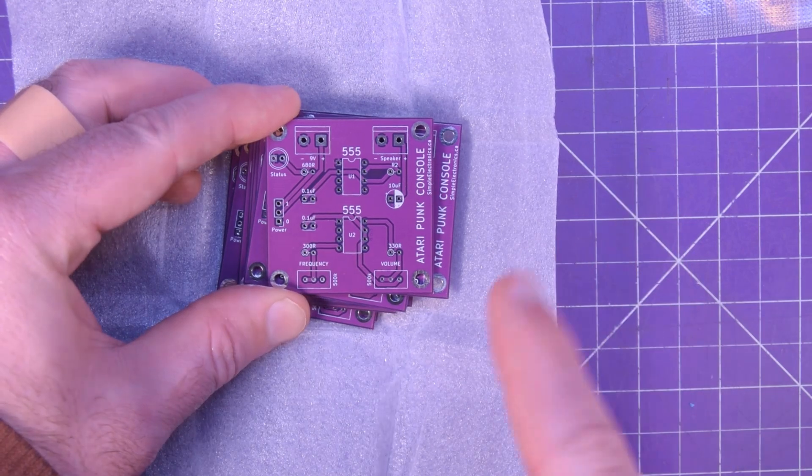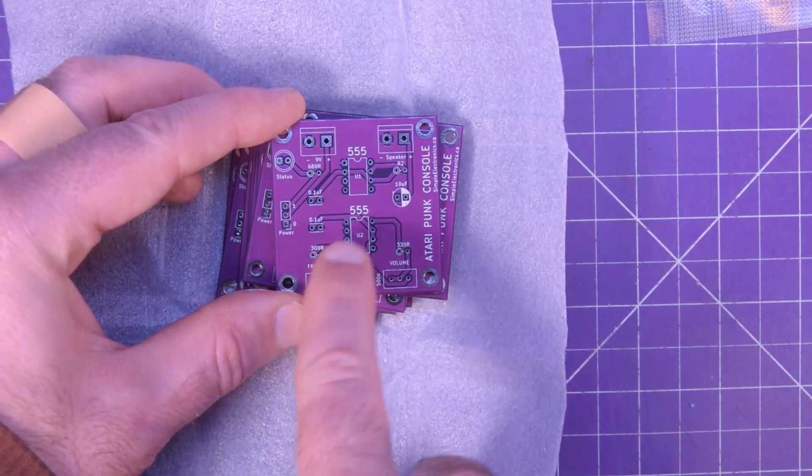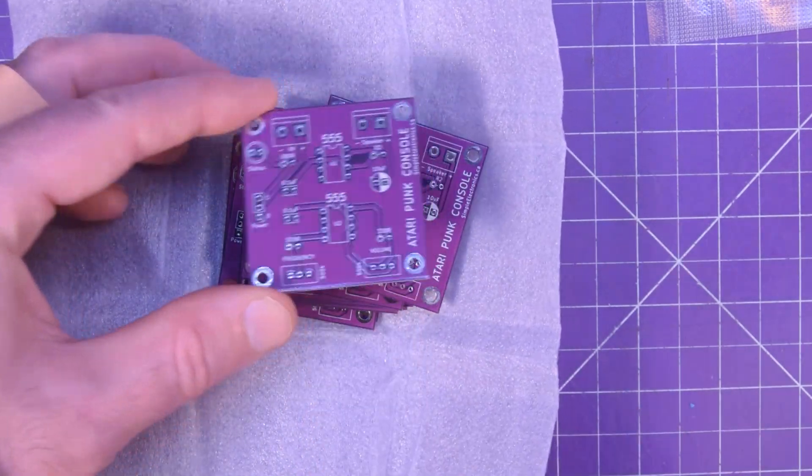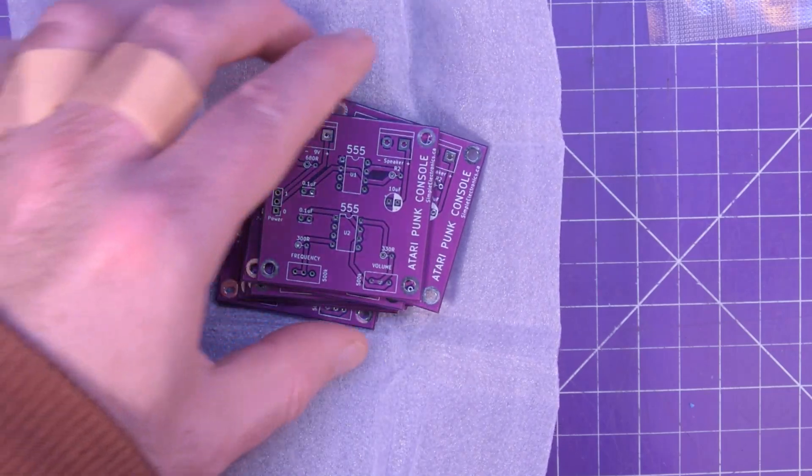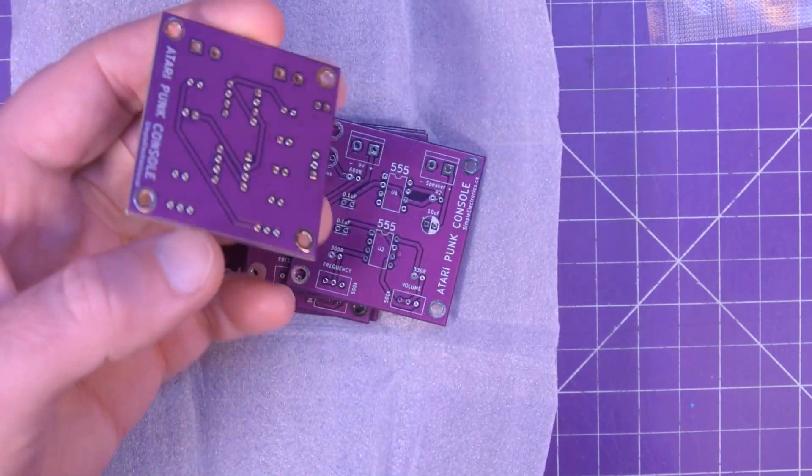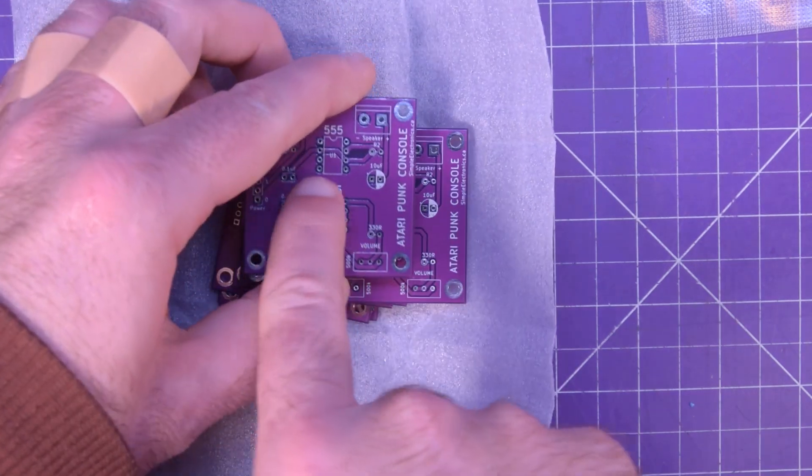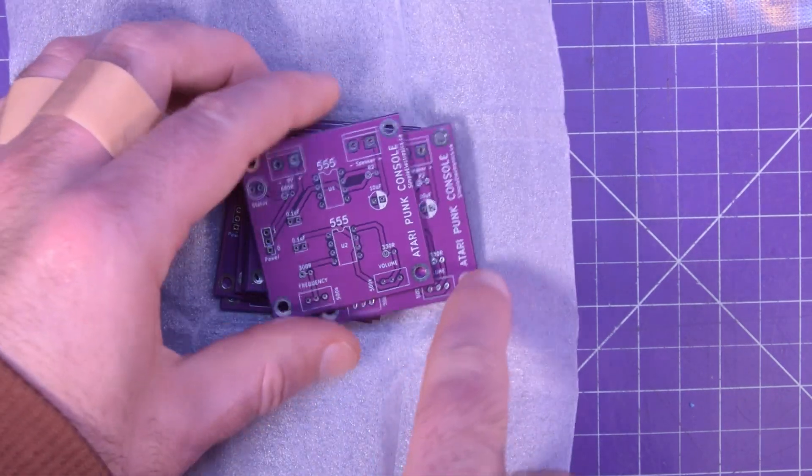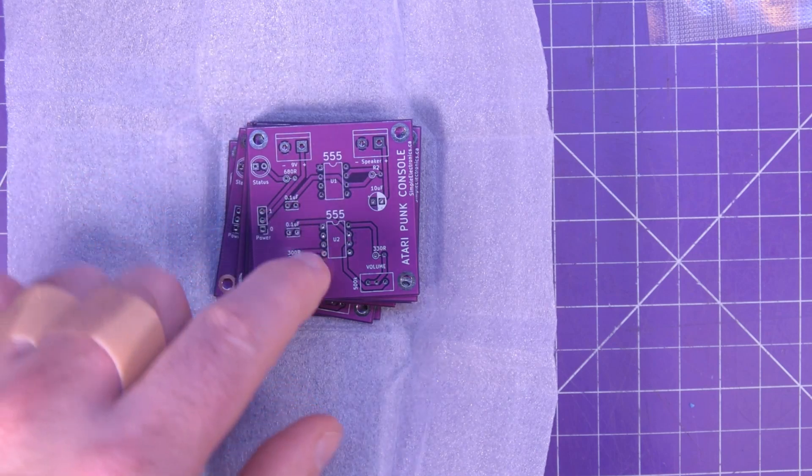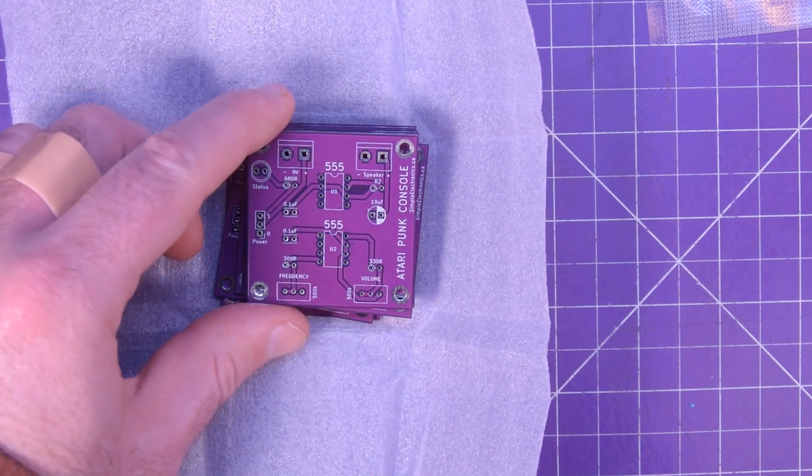And then the 500k pots on either side. And I think, because I love 555 timers so much, I think I'm going to put sockets in here. So I guess it's going to be some sort of a time lapse, or sort of a montage. But yeah, I'm going to have to connect this pin here.